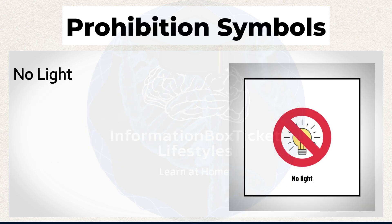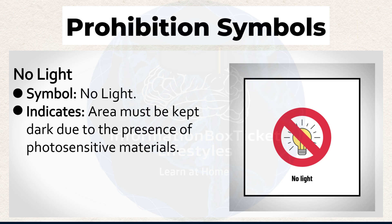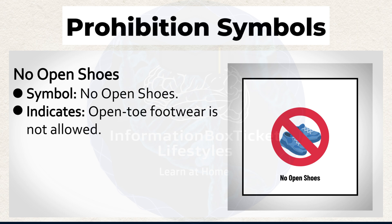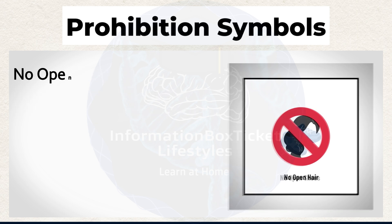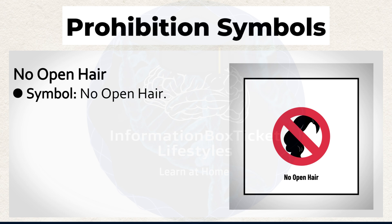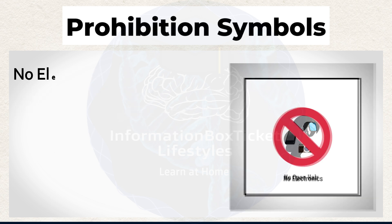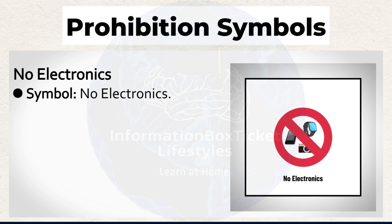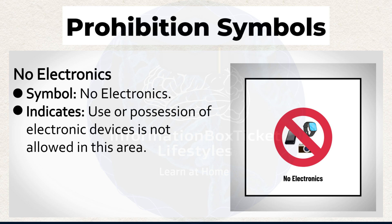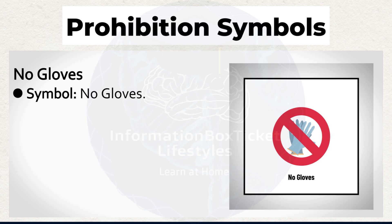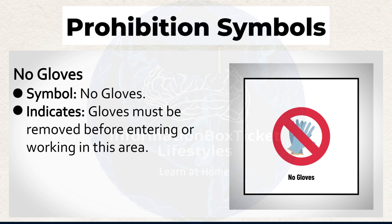No Light symbol indicates that the area must be kept dark due to the presence of photosensitive materials. No Open Shoes symbol indicates that open-toe footwear is not allowed. No Open Hair symbol indicates that hair must be tied up or covered — loose hair is not permitted. No Electronics symbol indicates that use or possession of electronic devices is not allowed in this area. No Gloves symbol indicates that gloves must be removed before entering or working in this area.